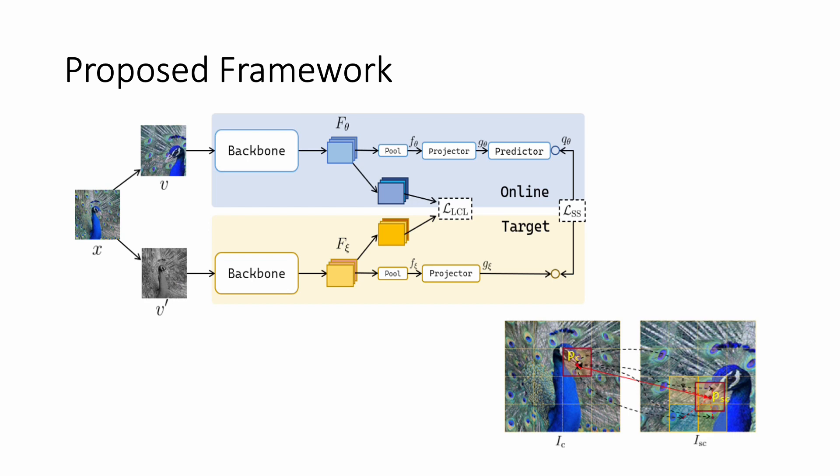Our full framework is based on this simple idea about correspondence. Here we show the full framework: we have the usual global self-supervised loss function, which makes augmented versions of the same image have similar features. We add another loss function called local correspondence loss, which makes the features of corresponding pixels similar. We do not need any label supervision during training; rather, we create the supervision from the data and from the augmentation.